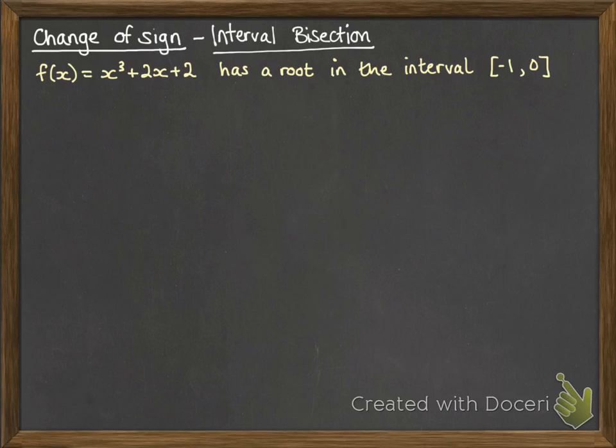So we're starting with this same equation. We know our root is between -1 and 0. So set up your table. Start with our first value, -1.